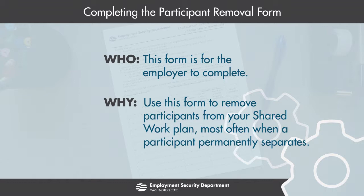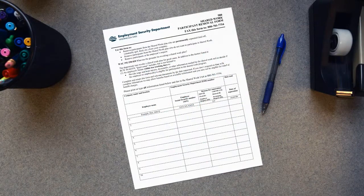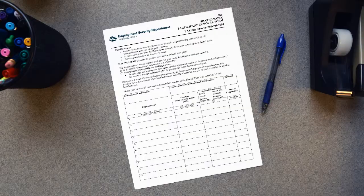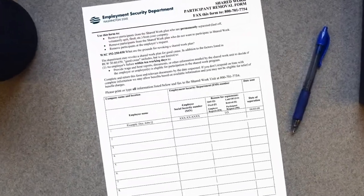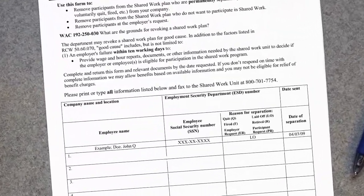The form is almost exclusively used when a participant in the shared work program from your company permanently separates, such as being laid off, fired, or quitting. This form is also required when your employee requests removal. When a participant is removed from your plan, your shared work plan is updated to reflect the change — we will not know this information until you tell us.